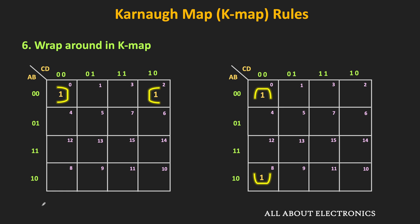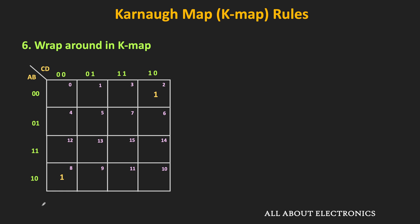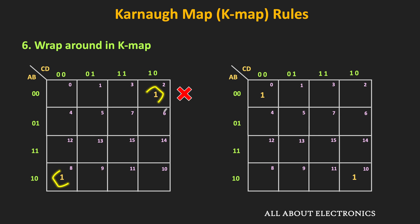However, we cannot make a group of minterms which are on opposite corners, because between those two minterms more than two variables are changing — so those two cells are not adjacent to each other, and therefore we cannot group them. The same applies to minterms M0 and M12.